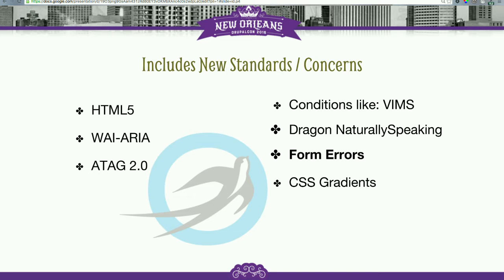We've also looked at Dragon NaturallySpeaking and Windows Speech Recognition — tools that people with mobility challenges tend to use when navigating the web by voice. The number of people who use voice control to navigate the web is probably higher than those who use screen reading tools. The Dragon NaturallySpeaking community is certainly one that could benefit from more accessibility work.